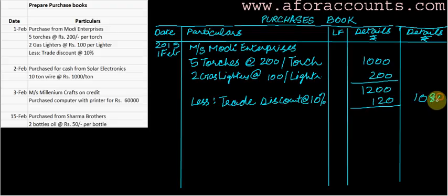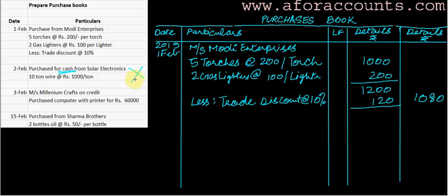Next transaction: 2nd February, purchased for cash from Solar Electronics 10 ton wire at the rate of 1000 per ton. My question is: do you record a cash transaction in your purchase book? The answer is no. All cash transactions are recorded in the cash book, not the purchase book. So you have to omit this transaction altogether. Recording a cash transaction in your purchase book would be wrong.